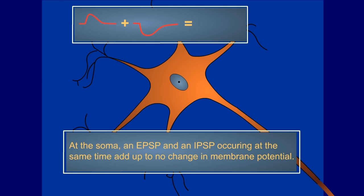An EPSP and an IPSP occurring at the same time add up to no change in the membrane potential.